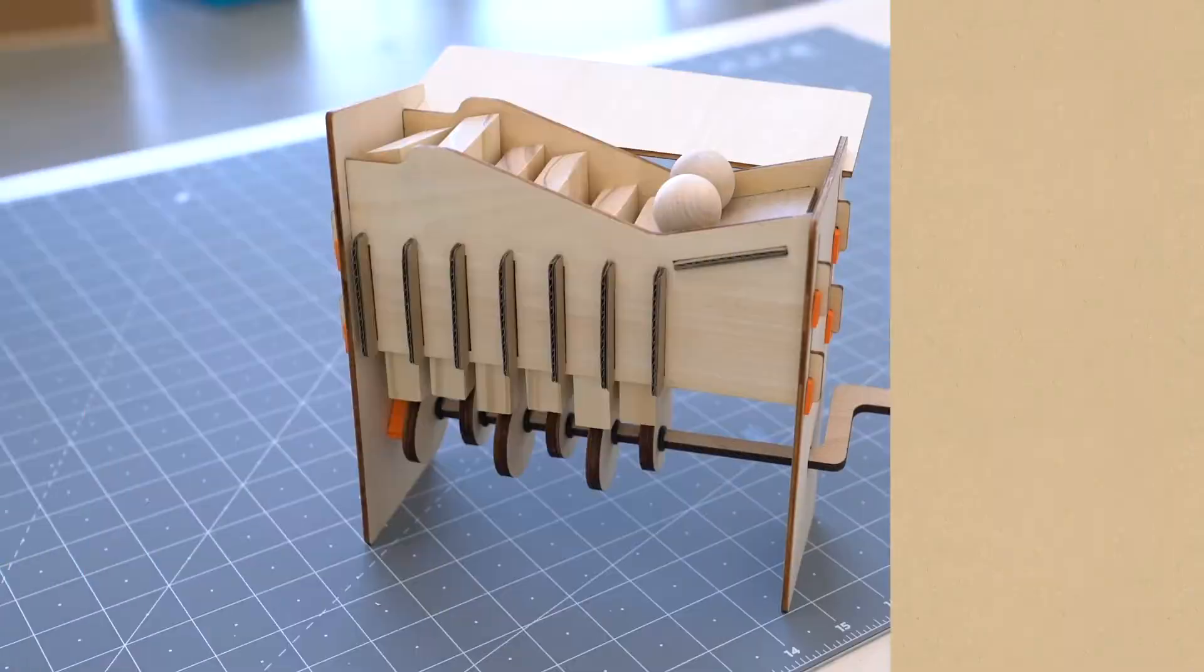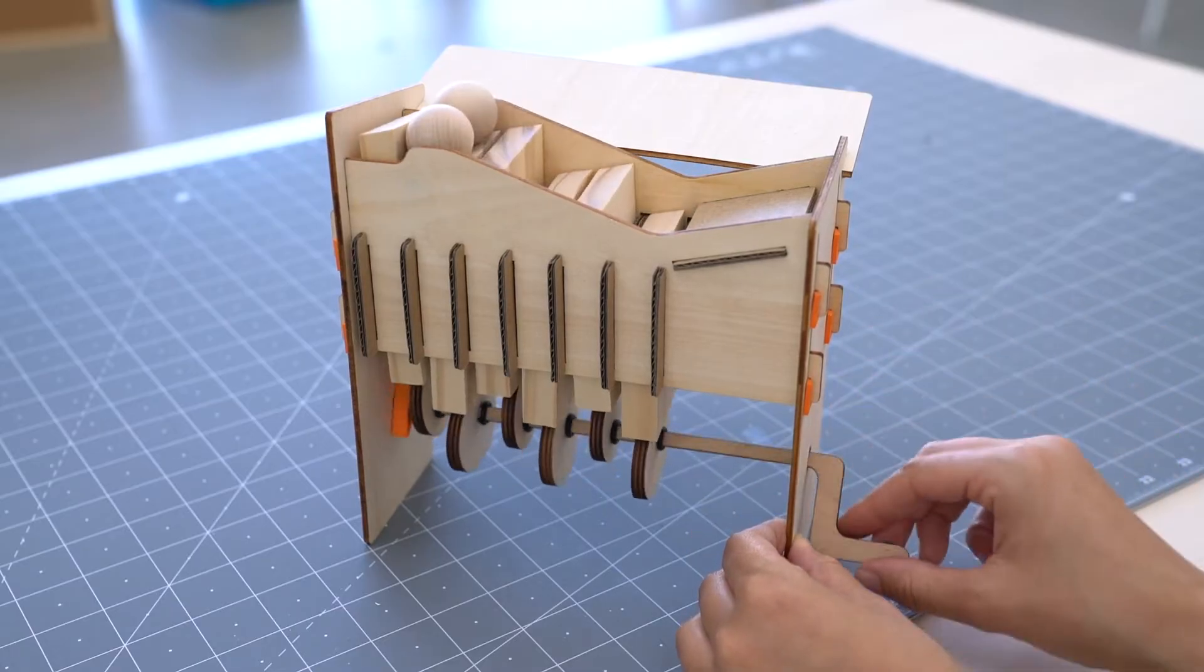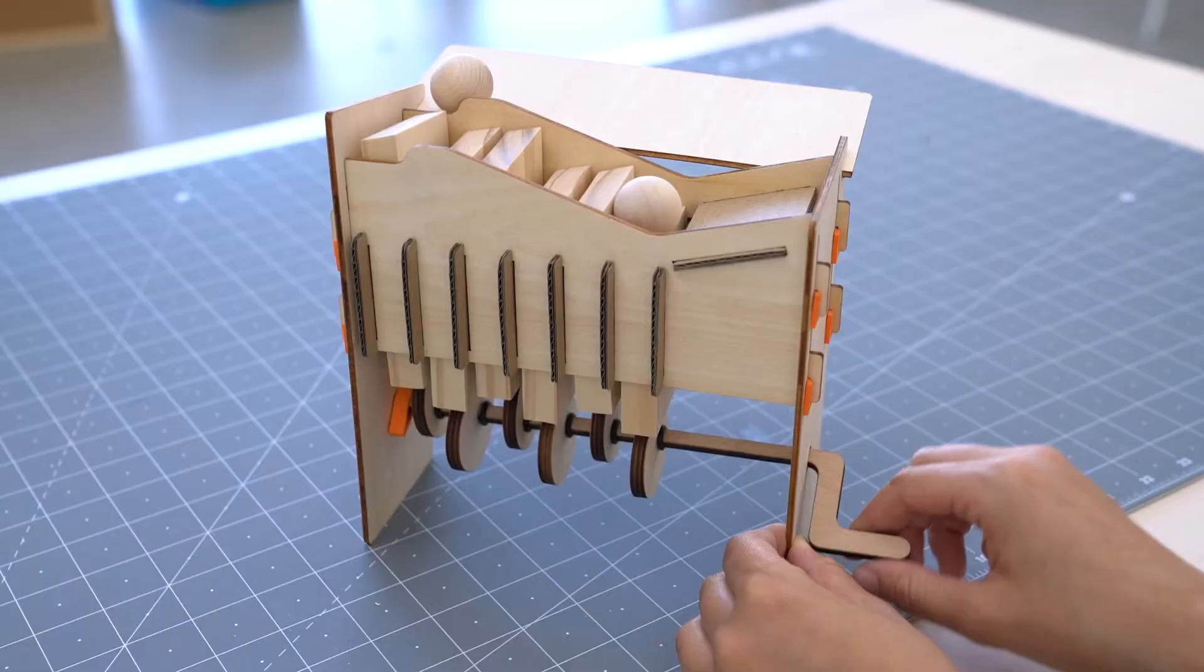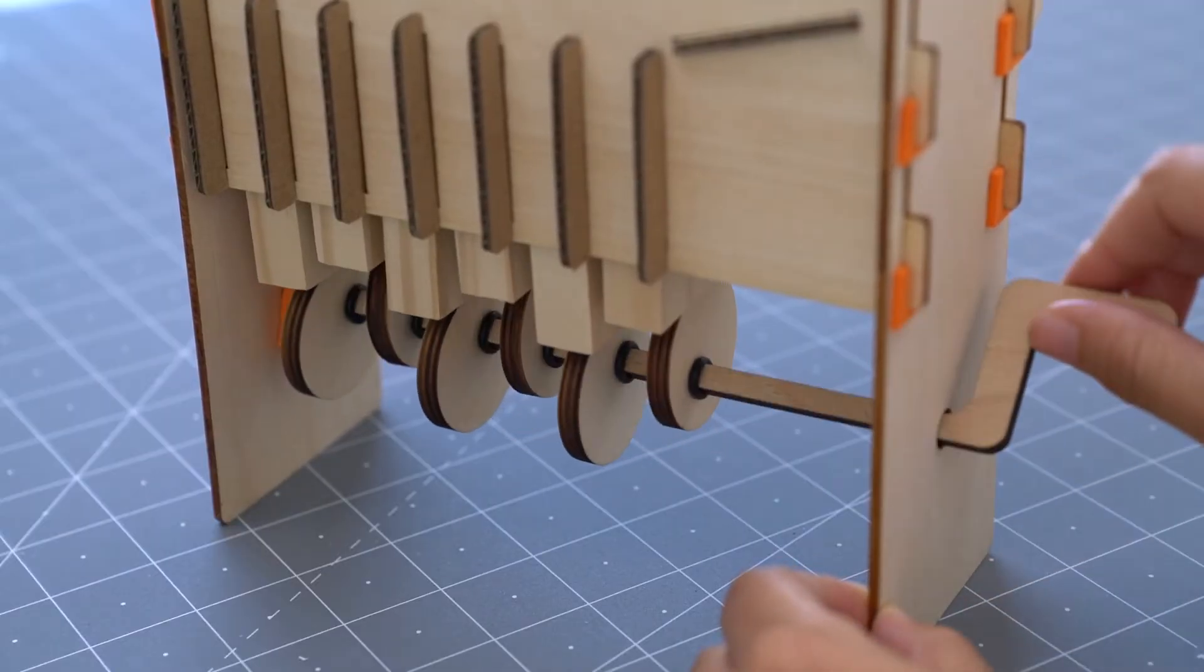Many automatons consist of the same basic parts that work together to make it look like they're operating on their own. Just like the Tinkercrate automaton, on the outside, there's a crank, which turns to make continual motion. As the crankshaft spins, it turns these circular parts called cams.